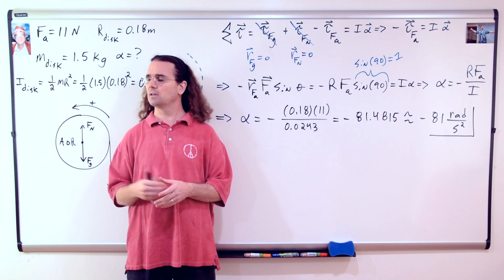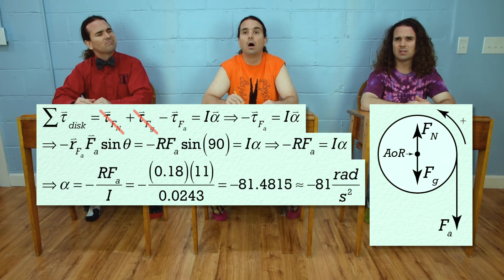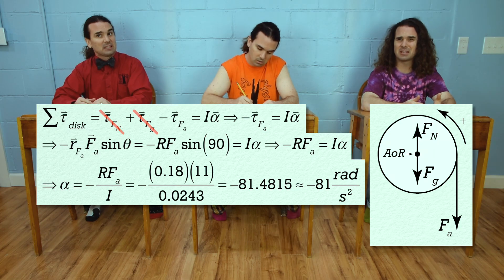Very nice solution everybody. Mr. P? Yes, Bo? Why did you choose a direction which would give us a negative angular acceleration? That does not make sense to me.